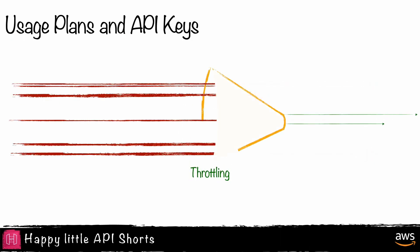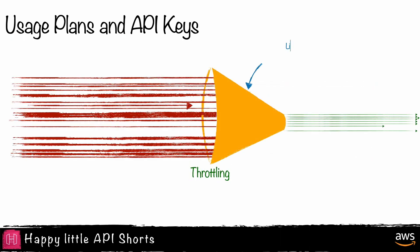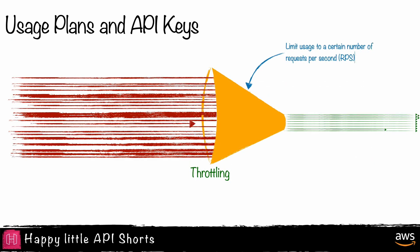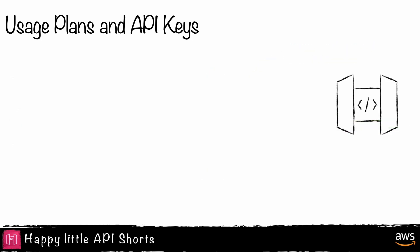Throttling allows a developer to limit usage to a certain number of requests per second and includes configuration for burst limits. For example, I create an API endpoint that throttles at 15 requests per second with a burst limit of 30.